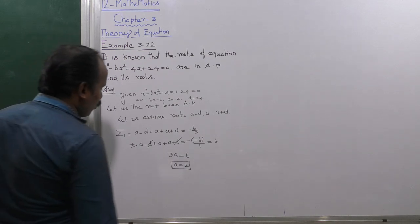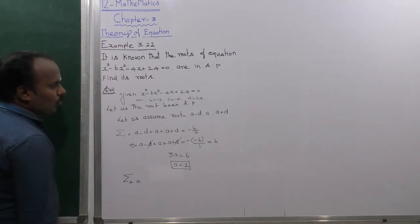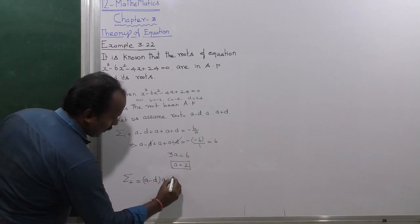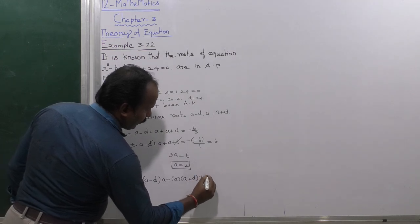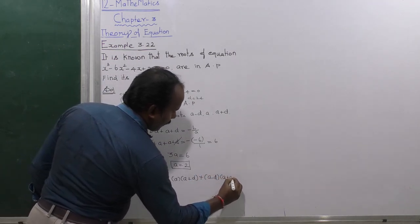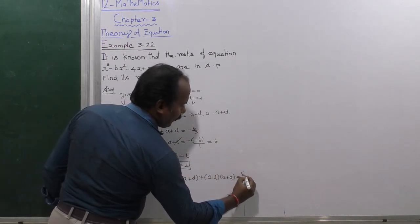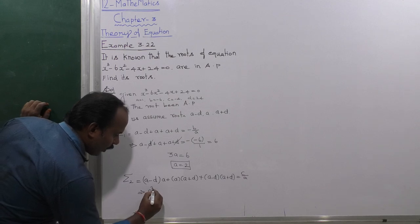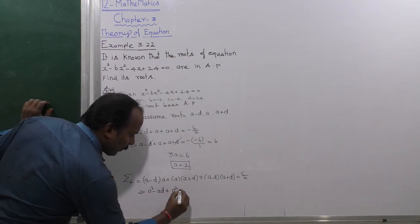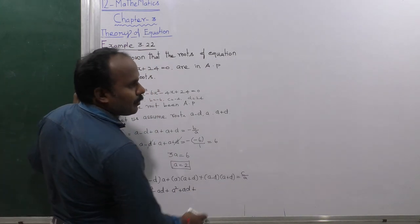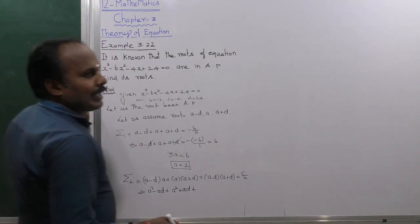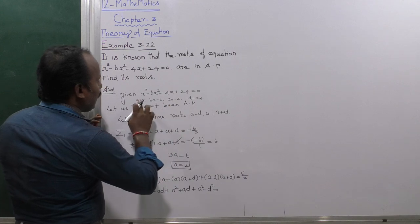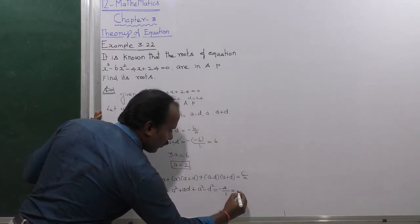Next, find summation 2. Summation 2 is the sum of products of pairs of roots: (A - D)·A + A·(A + D) + (A - D)(A + D) = C/A. Expanding: A² - AD + A² + AD + A² - D² = C/A. Using the identity (A+B)(A-B) = A² - B², this gives 3A² - D² = C/A = -4/1 = -4.